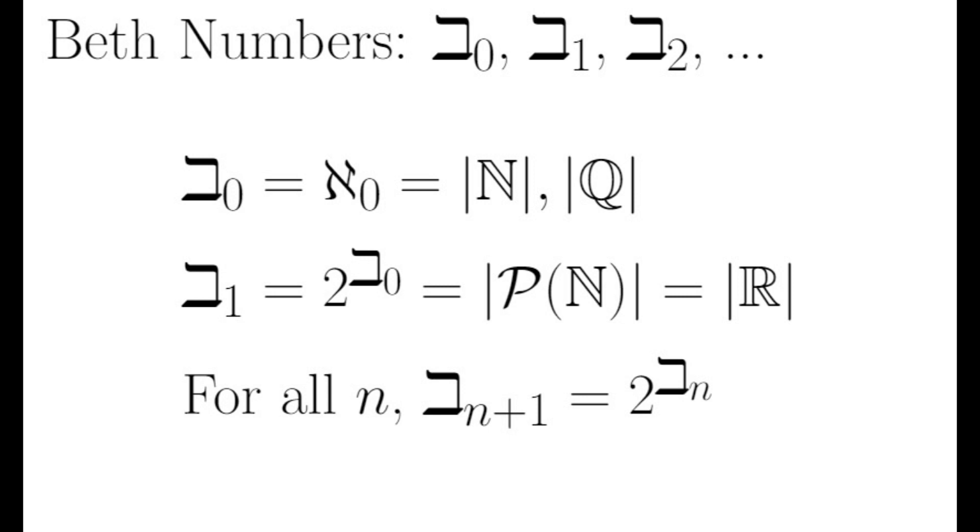Another set of infinite cardinals is the set of Beth numbers. We define Beth null to be aleph null. In other words, Beth null is the cardinality of a countably infinite set. It is the size of the natural numbers and the rationals.